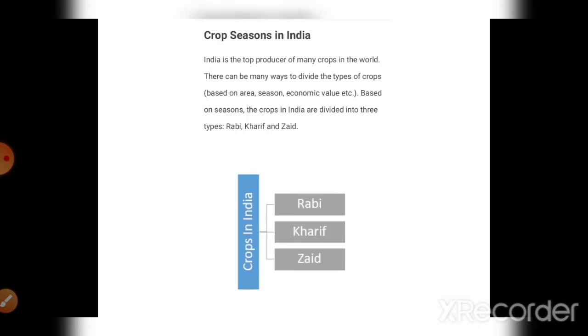Next topic: crop seasons in India. You know that crops are grown in India according to the seasons. There are three seasons in India according to the crop, or you can say crops are of three types according to the season. The first one is Rabi crop, the second one is Kharif crop, and the third one is Zaid crop.